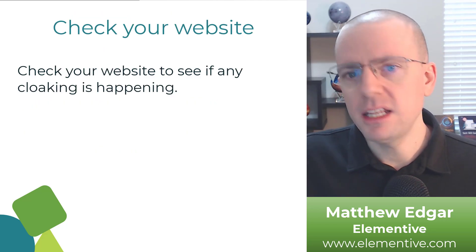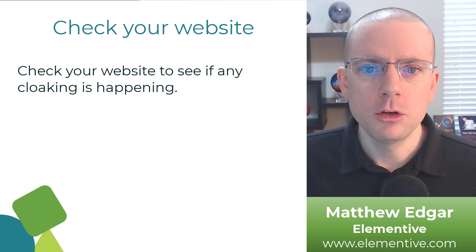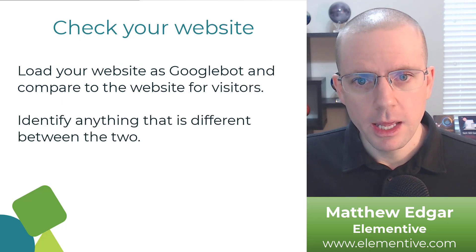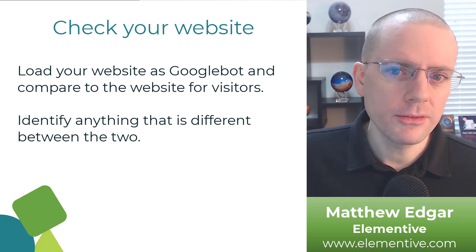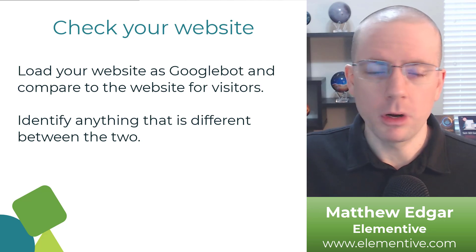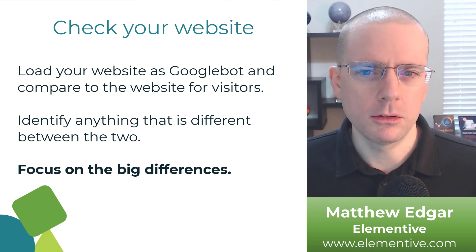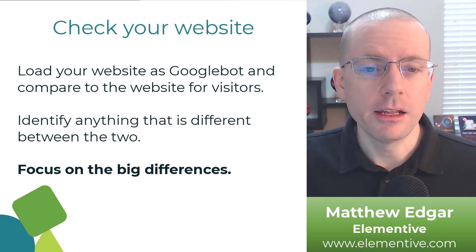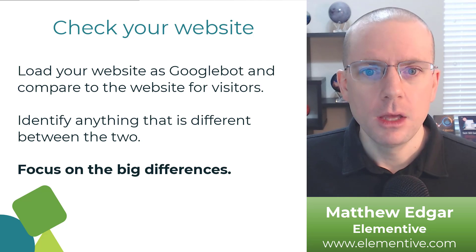It's important to check your website to see if any cloaking is happening, whether it's intentional or accidental. You can load your website as Googlebot and compare the output to the website as a normal user. What you're looking for is whether the page content is very different for Googlebot and users. A few minor differences won't cause problems — not showing ads to bots is fine — but you're watching for bigger differences, like whole sections of the page being removed from or added to Google's view.